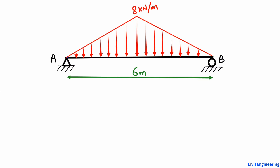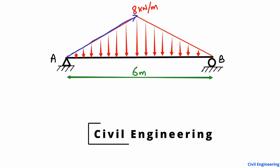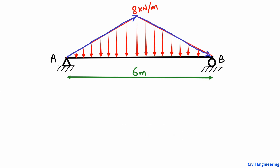The beam has a uniformly varying load acting on it. You can see here there is a triangular load increasing from one support up to the midpoint, and then decreasing from that midpoint back down to the other support. So there is a uniformly varying load acting on the beam.